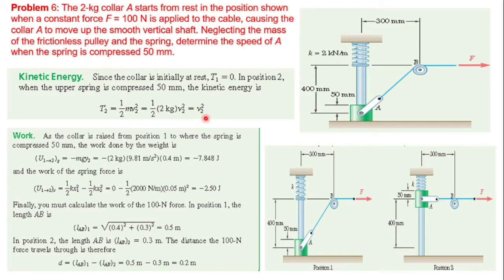Calculating work one by one: the work due to weight — the collar moves upward 400 mm. Work due to weight equals mg times displacement, which is negative since motion is upward.